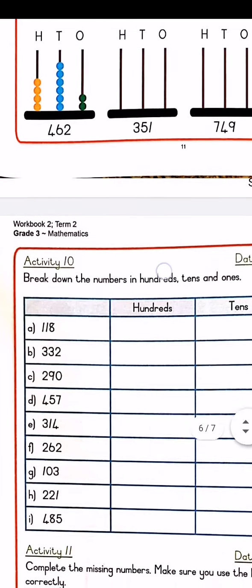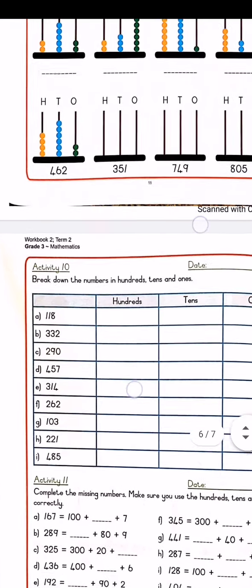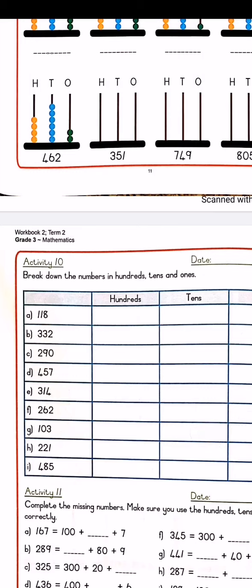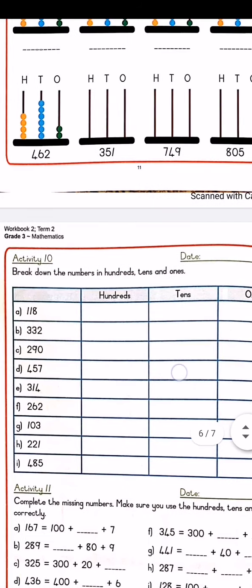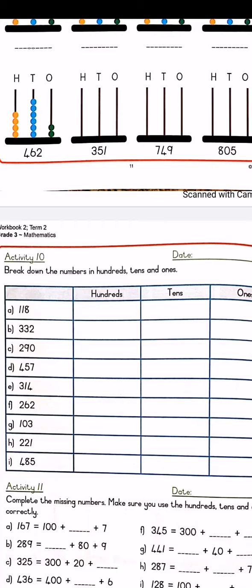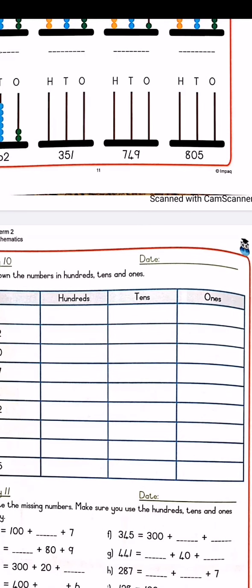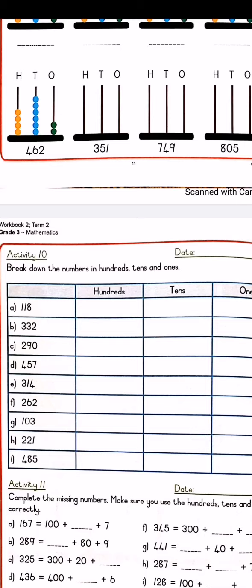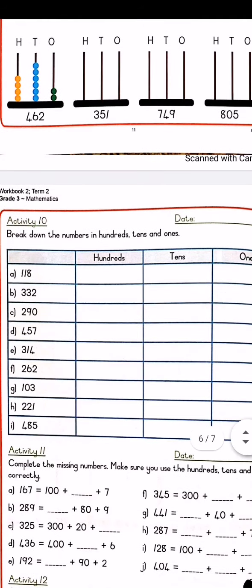Then your last activity is activity 10. Activity 11, we'll do tomorrow. Activity 10, break down the numbers in 100s, 10s, and 1s. 118 will be how many 100s? 1. How many 10s? 1. And how many 1s? 8. So you can write 100, 10, and 8. So you can either write 1 for 1 100s, 1 for 1 10s, or 8 for 8 1s. Or you can write a 100 in the 100 columns, a 10 in the 10s column, and an 8 in the 1s column. Teacher will accept both ways.